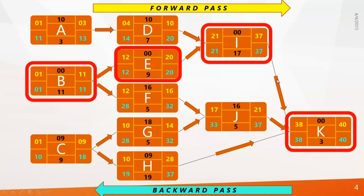The critical path tells you the shortest path that drives the project duration. Now let's see the same example done in Primavera P6 and see how P6 calculates everything so much faster.